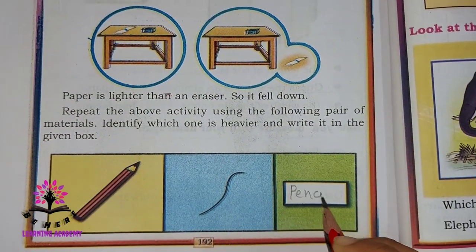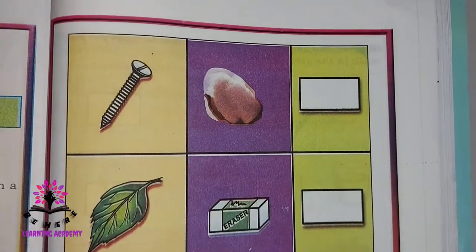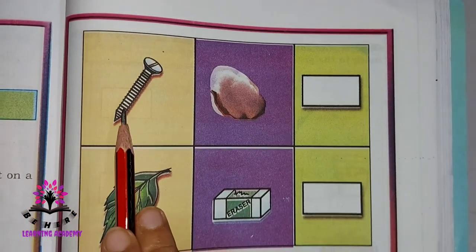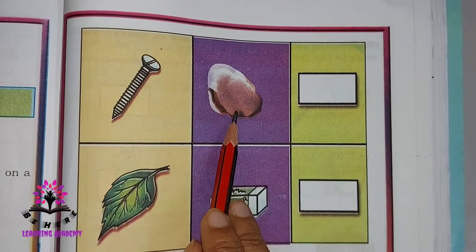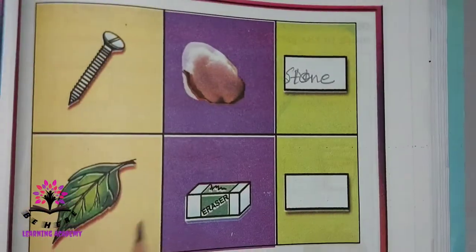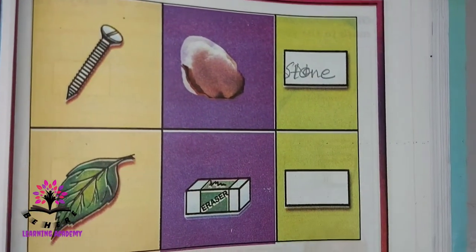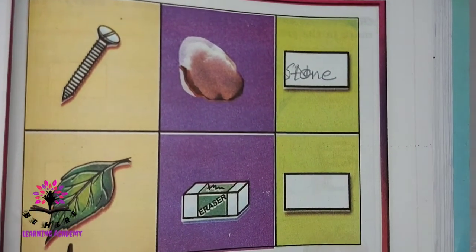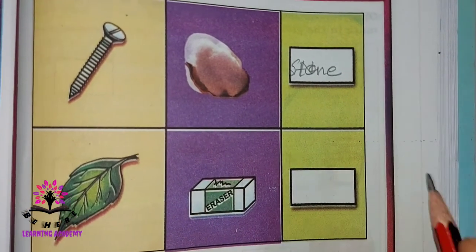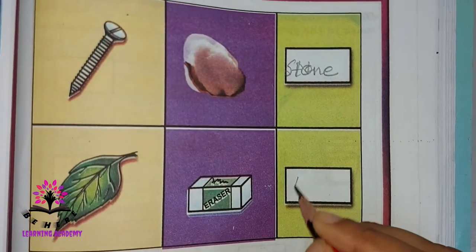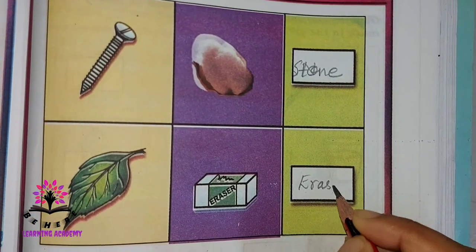Write pencil in the given box. Next, a nail and a stone — when you compare, the stone is heavier. When you consider a leaf and an eraser, the eraser is heavier.